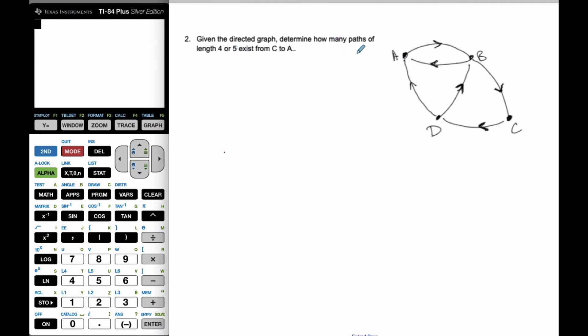Okay, so given this directed graph, determine how many paths of length 4 or 5 exist from C to A.